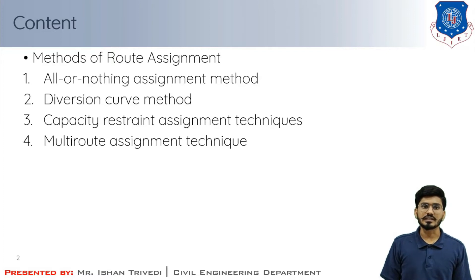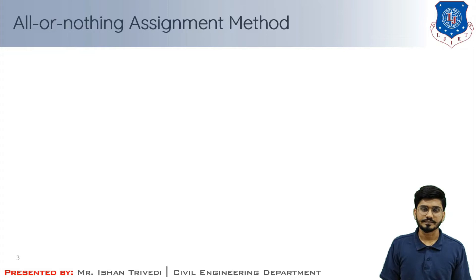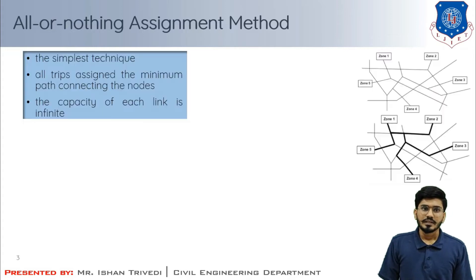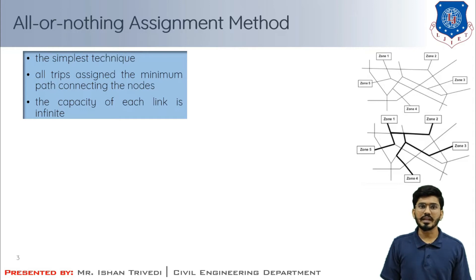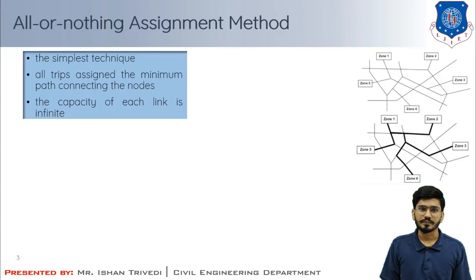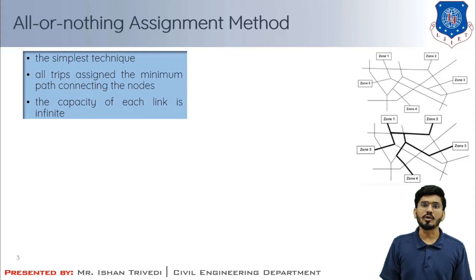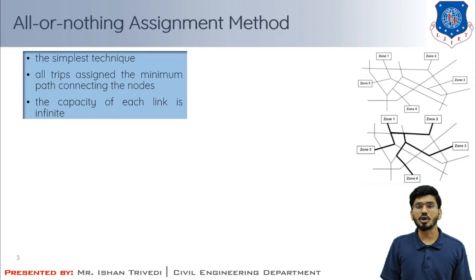First we will understand the all-or-nothing assignment method. This is the simplest technique in which all the trips for a zone are assigned to the minimum path connecting the nodes. The minimum path is the route which has the least travel time and travel cost or distance. The technique assumes that the capacity of each link is infinite, so that the volume of traffic does not affect the time or cost of travel.